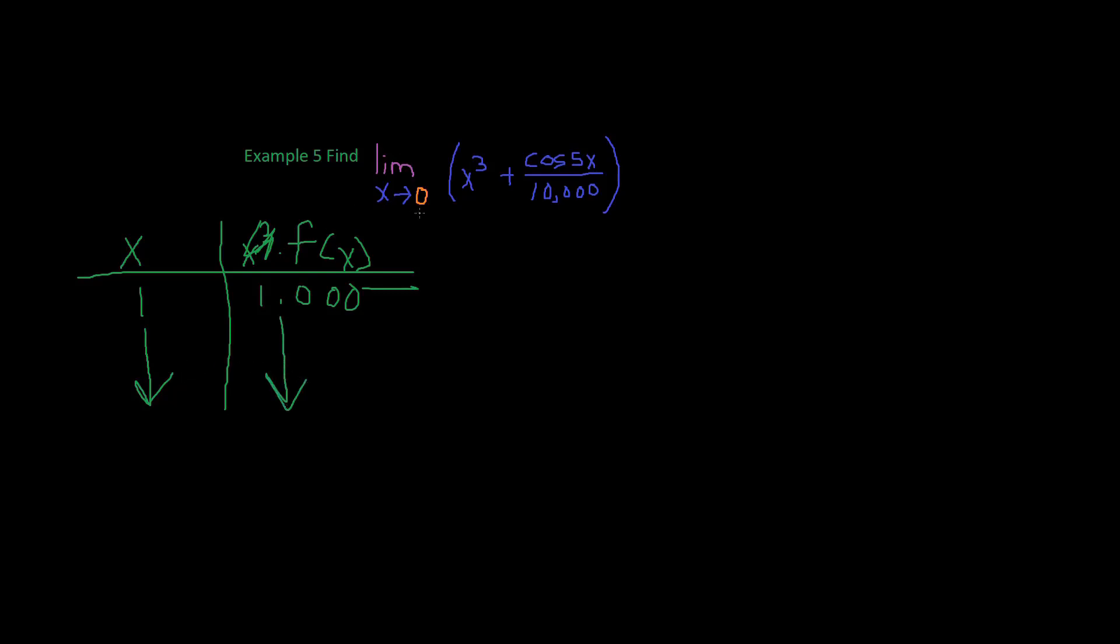And what we're trying to do, we're trying to approach 0. So let's say I put 0.01. And so what this function is going to give us, it's going to give us 0.00101. And so it appears that this function is approaching 0, right?